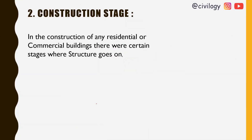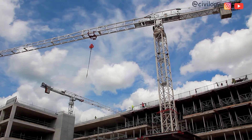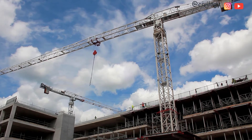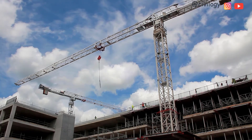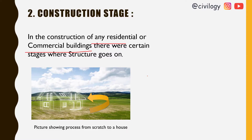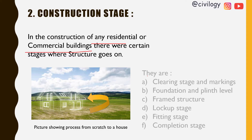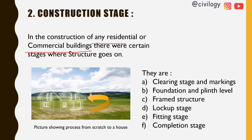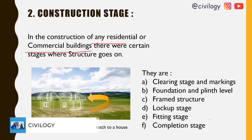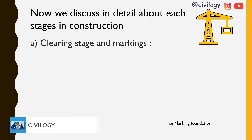Now let's discuss the construction stage. In the construction of any residential or commercial buildings, there are certain stages. In this picture you can see a building going from scratch through certain procedures to become a new house. The major steps involved are: clearing stage and marking stage, foundation and plinth level, framed structure, lockup stage, fitting stage, and completion stage.